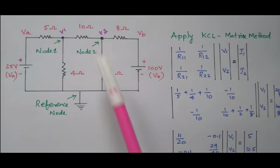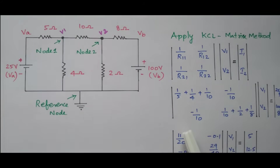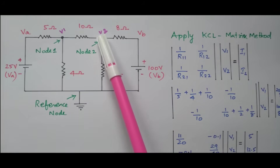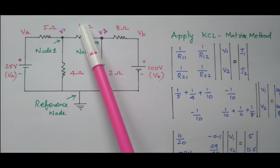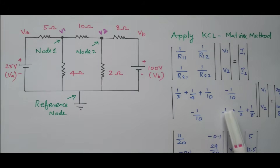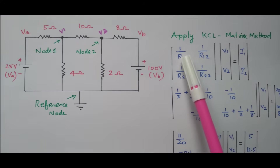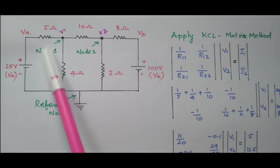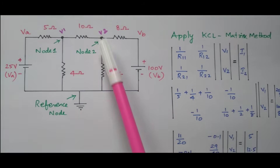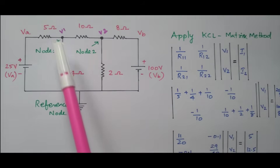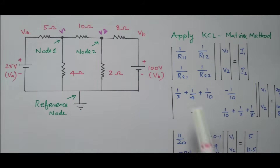R21 is also the resistor connected between node 2 and node 1, which is also 10 ohm, so minus 1/10. R22 is the sum of all resistors connected at node 2: the 10 ohm, 2 ohm, and 8 ohm, so 1/10 plus 1/2 plus 1/8. We now frame the resistance matrix: R11 and R22 on the diagonal, and R12 or R21 (the 10 ohm between nodes) off-diagonal.